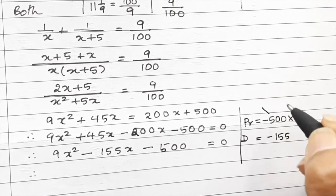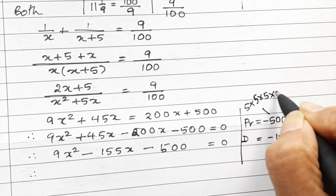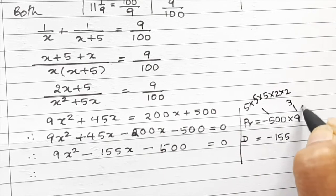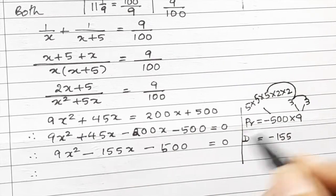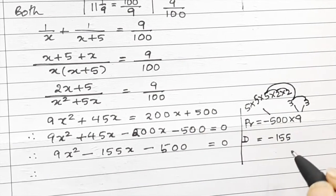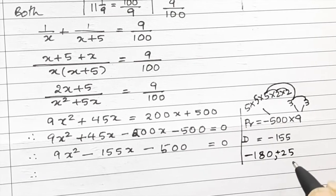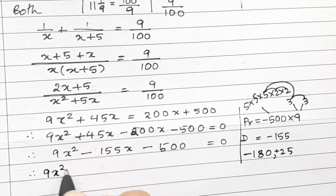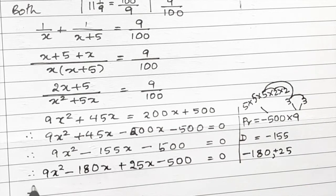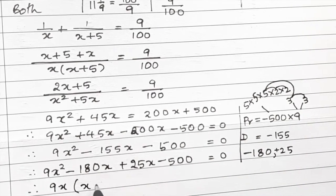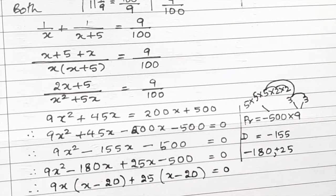Now for splitting the middle term: the product is 9 times 500 equals 4500, and we need two numbers that multiply to 4500 and add to negative 155. That gives us negative 180 and positive 25, since 180 times 25 equals 4500 and minus 180 plus 25 equals minus 155. So the equation becomes 9x² minus 180x plus 25x minus 500 equals 0.